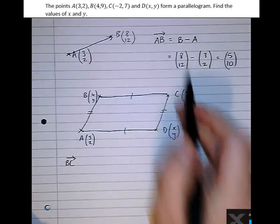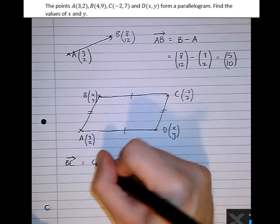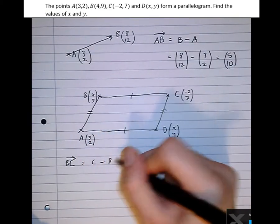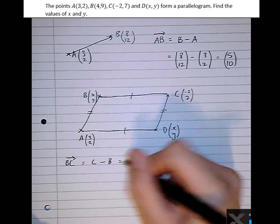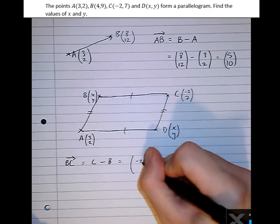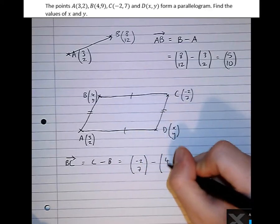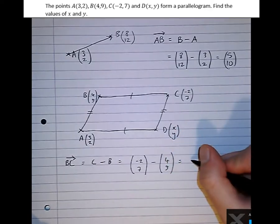So to get from B to C, look in our tutorial before. That is the position of C, take away the position of B, equals (-2, 7), take (4, 9), equals (-6, -2).